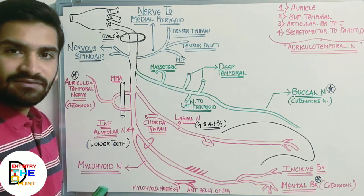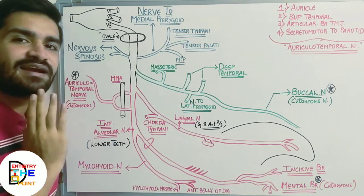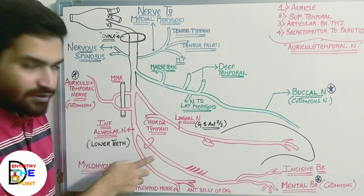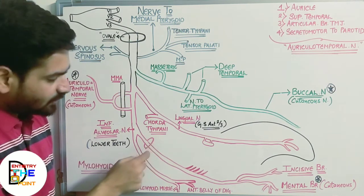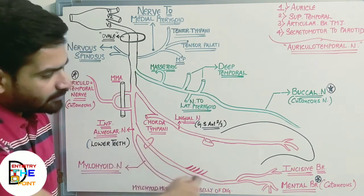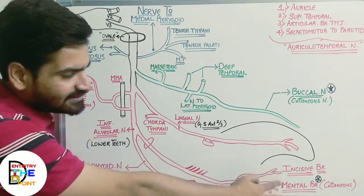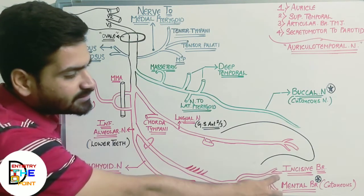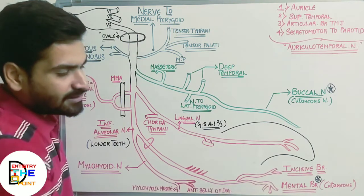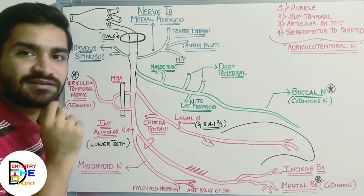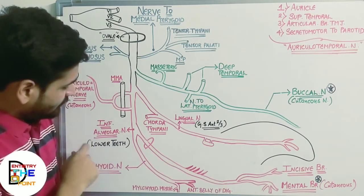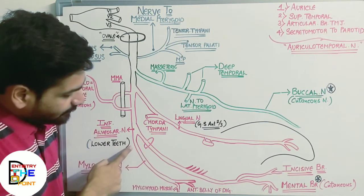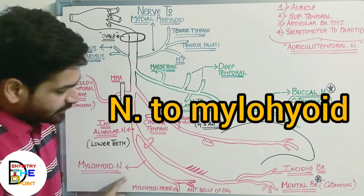The third branch of the posterior division is the inferior alveolar nerve, which mainly supplies the lower (mandibular) teeth from behind to the midline on one side and from the midline on the other side. Before entering the mandibular foramen, the inferior alveolar nerve divides into two branches: the incisive branch and the mental branch. The mental branch is the third cutaneous branch of the mandibular nerve.